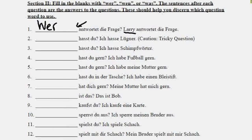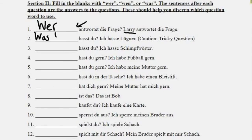Number two: blank hast du? Du is in the sentence as the subject, so the question word is accusative. The answer is Ich hasse Lügner — I hate liars. Liars could be people, so we could say wen — whom do you hate? Number three has the same structure but the answer is Ich hasse Schimpfwörter — I hate curse words. Curse words are obviously not people, so we use was here.